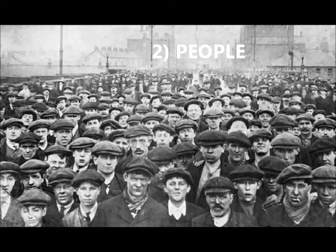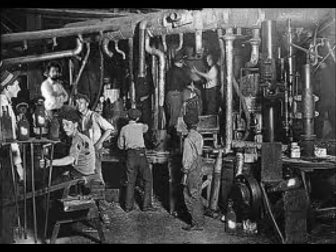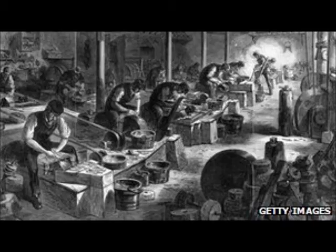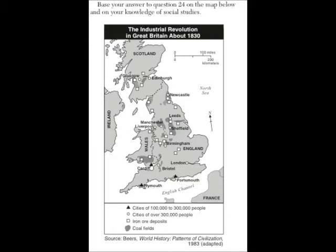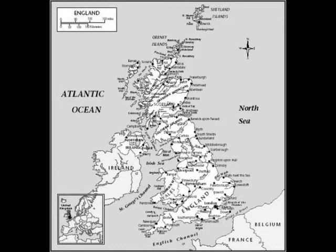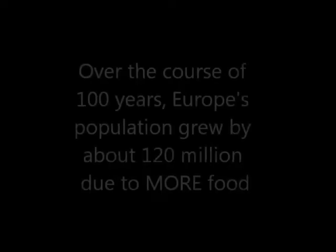Number two: Great Britain had a huge population. A huge population resulting from the agricultural or agrarian revolution meant that more workers for the new factories were available in all those cities. Inventions like Jethro Tull's seed drill, the enclosure movement, and new crop rotation techniques made agricultural advances possible, leading to a more stable food supply and eventually a population increase. Europe's population grew by about 120 million people in a hundred-year period.